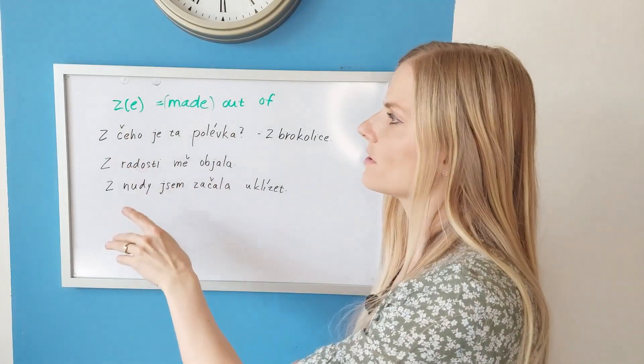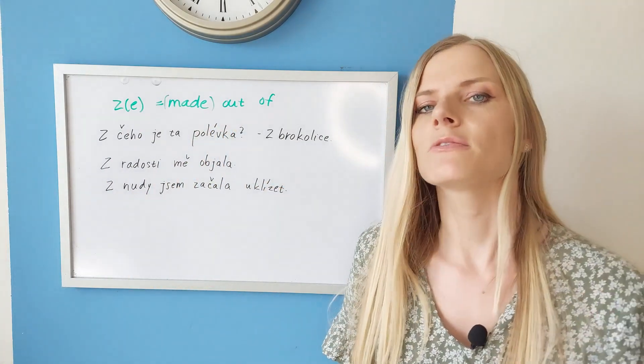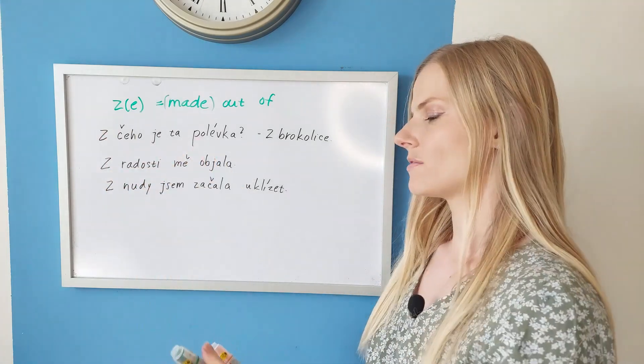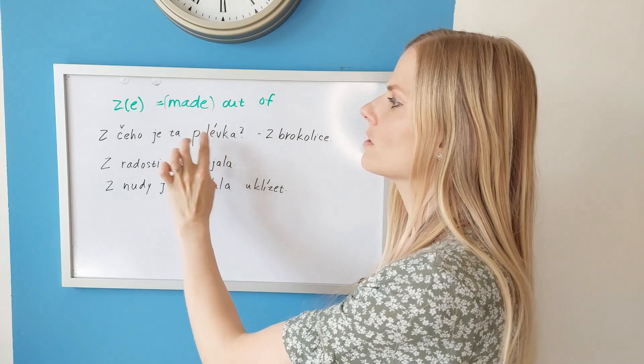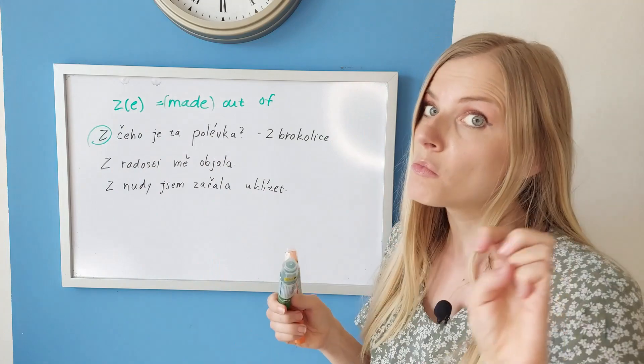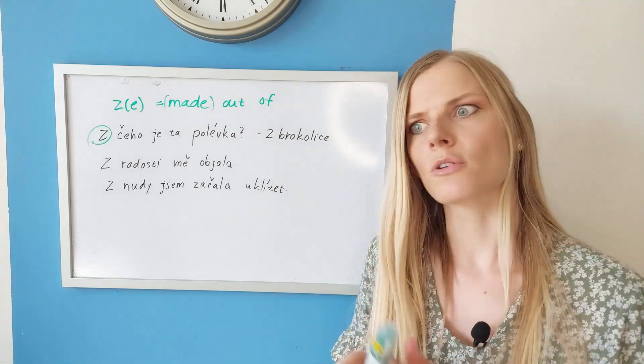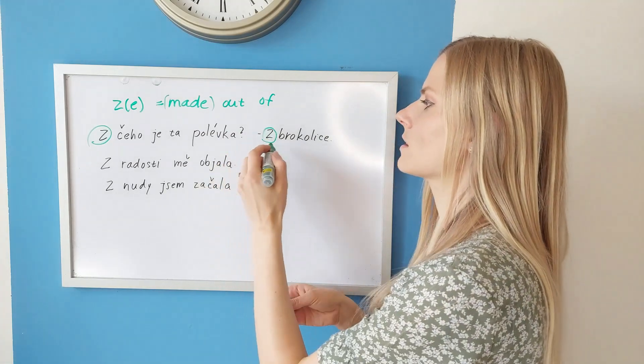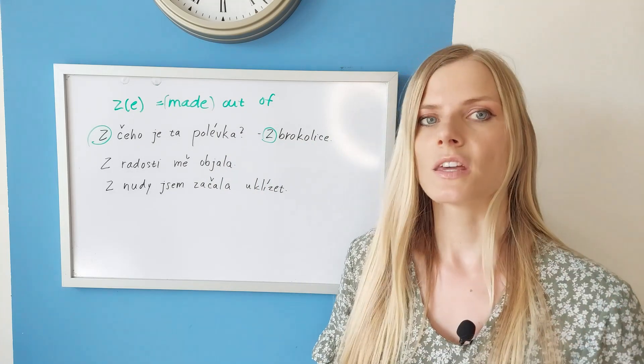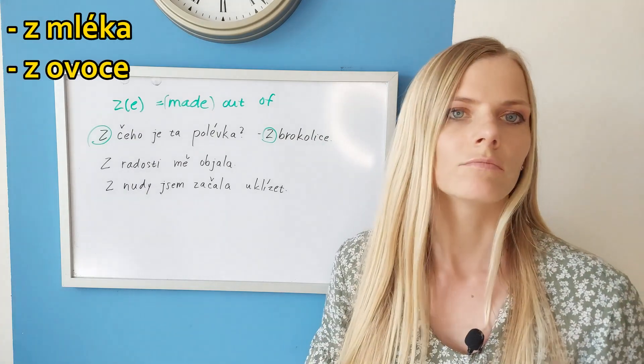I would like to have a look at a couple of more phrases where we use Z or Ze as in made out of or out of, and we speak about material or emotions. Z čeho je ta polévka? - What is the soup made of? Z brokolice - of broccoli. When you have a recipe and you say what is it made of, you would say je to z mléka - it's from milk, z ovoce - from fruit.